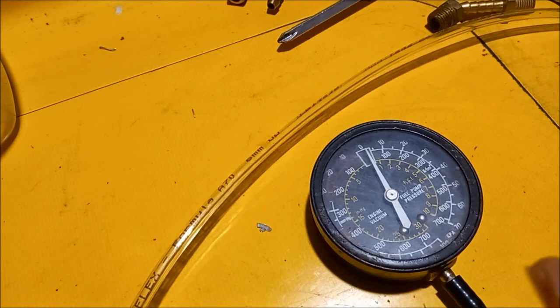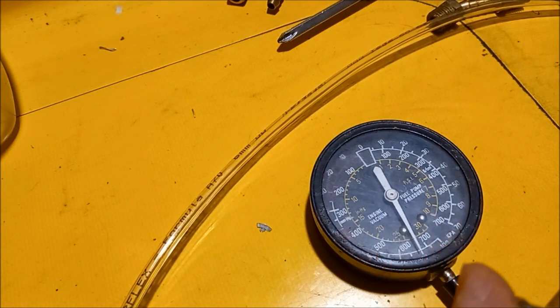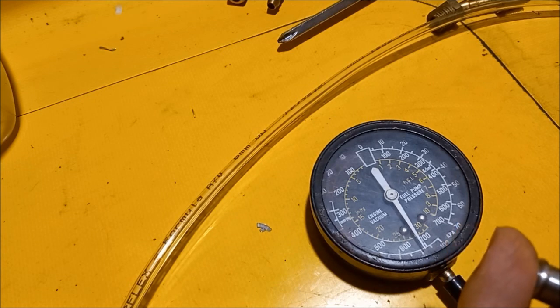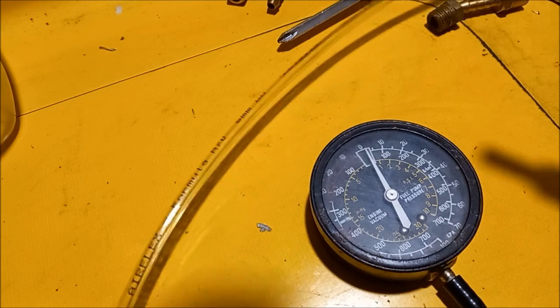So that's showing 25 inches of mercury. And then if we block the hole... We're getting about 27 inches of mercury.